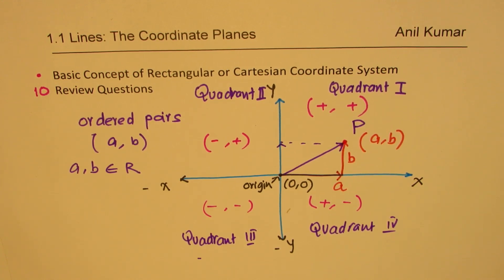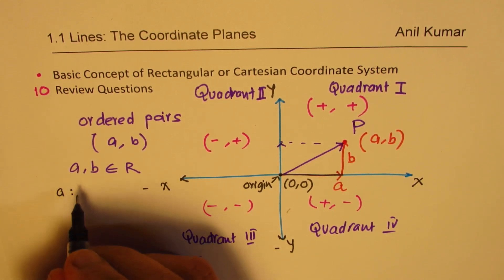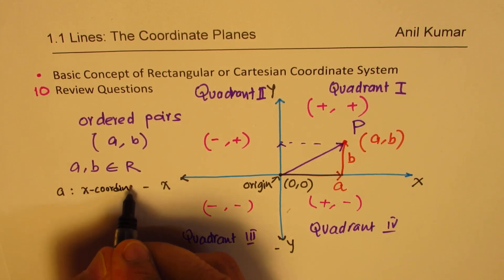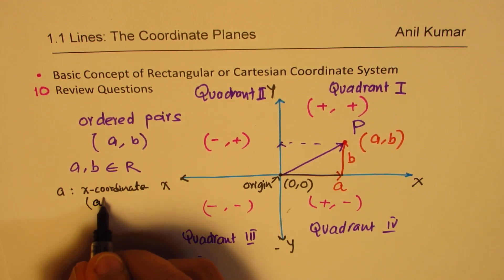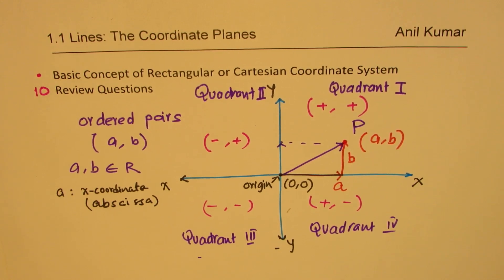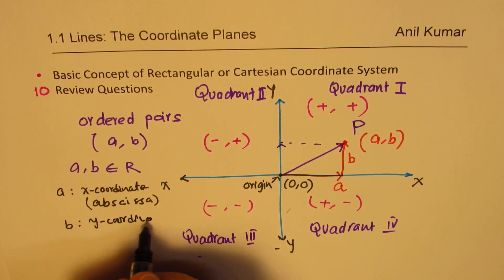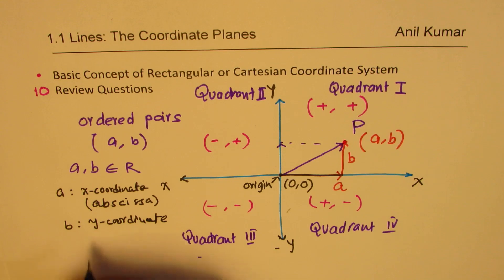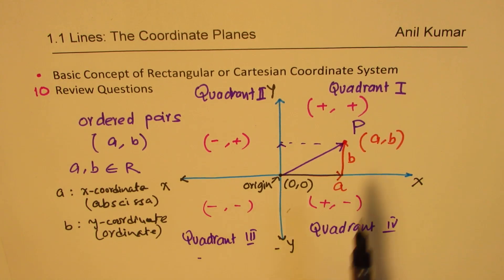There are other names given to a and b. We also call a the x-coordinate, and at times we refer to it by the name abscissa. Similarly, b can be written as the y-coordinate, or it is called the ordinate. These are the names and keywords you will come across when talking about a coordinate plane.